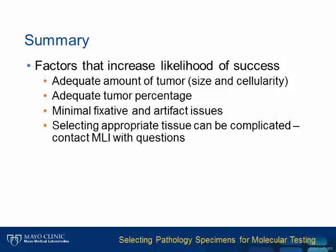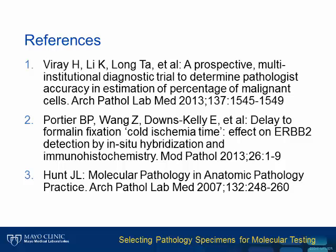In summary, the success of molecular and cytogenetic testing depends in large part on having an adequate amount of tumor, thereby sufficient DNA, having enough tumor percent, and minimizing potential tissue issues. Thank you for your attention!